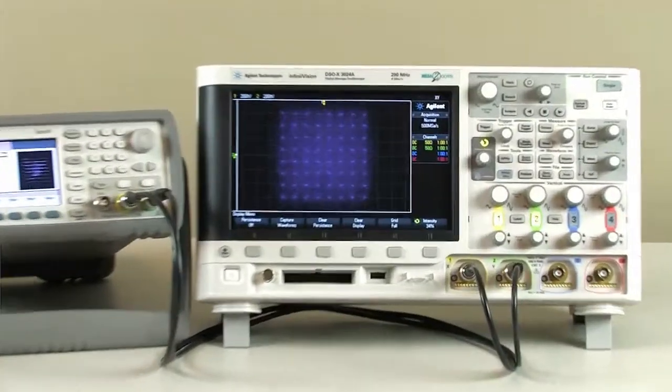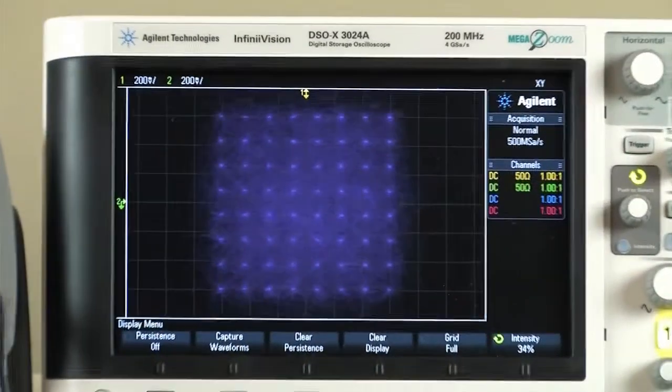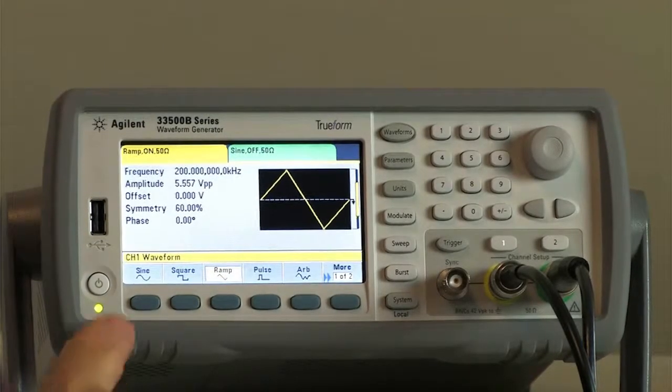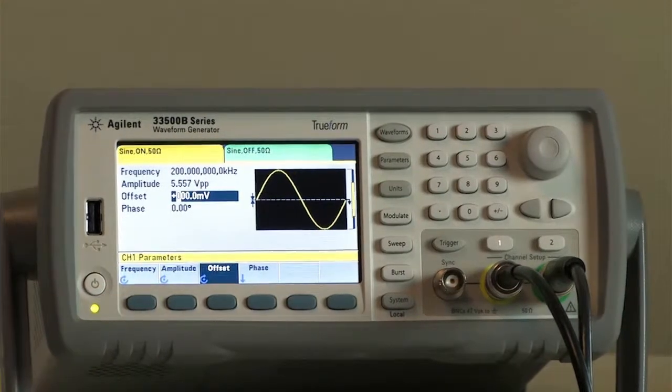There's even an optional IQ player available on the two-channel arbitrary waveform models. The internal 250 MHz per second sample rate and 16-bit vertical resolution result in excellent amplitude accuracy.